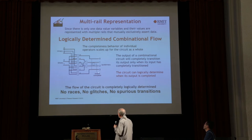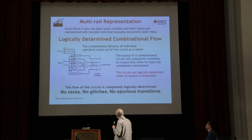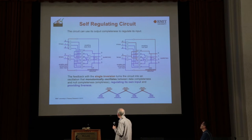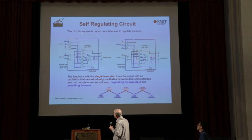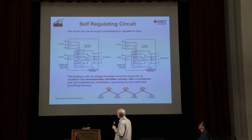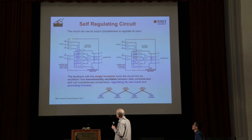When it's done, one rail has become data or all the rails have become null. The flow of the circuit is completely logically determined — there are no races, no glitches, no spurious transitions. The completeness behavior of the individual gates ensures that. The circuit can take that output completeness and feed it back to regulate its own input. This rank of gates will transition to data only when both inputs are data. As the data propagates through, these gates will maintain the data — they remember the data as it propagates through the circuit.